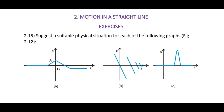Hello students. In this video, we are going to discuss problem 2.15: Suggest a suitable physical situation for each of the following graphs. Here we have three graphs. The first graph is based on xt, b is the vt graph, and c is the at graph. We will discuss one by one.